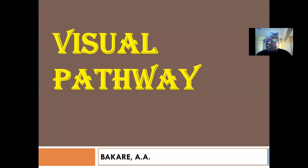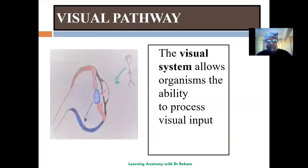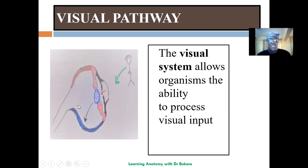Our topic for today is the visual pathway. The visual pathway is a system that allows organisms to process visual input. This is the configuration of the eye and this is the object. The visual pathway allows the eye to visualize this image, and apart from seeing images, it also allows for a number of functions related to visuals.